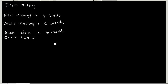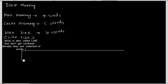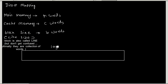In direct memory mapping, assume that the main memory has M words, cache memory has C words, and block size is B words. The address issued by the processor would be log M bits in size.